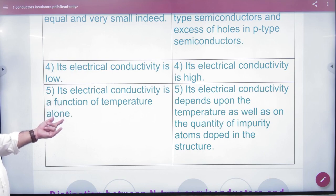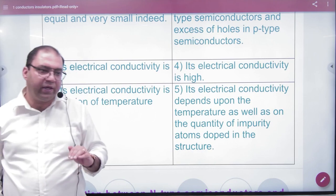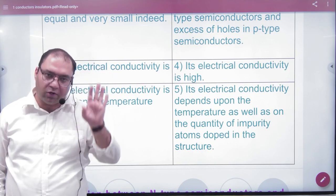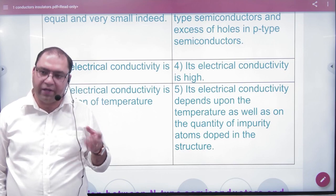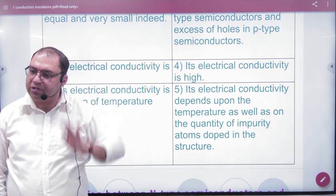In intrinsic semiconductors, electrical conductivity is a function of temperature alone. At zero Kelvin, there are no electrons in the conduction band. As temperature increases, electrons move to the conduction band and electrical conductivity increases.